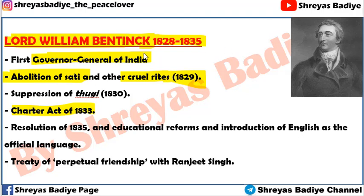Lord William Bentick abolished Sati and also suppressed Thuggee in 1830. The Thug people used to strangle travellers with a handkerchief or rumal, rob them, and kill them. Bentick stopped this in 1830. After that, the Charter Act of 1833 came, and you know that in 1833 William Bentick became Governor General of India.